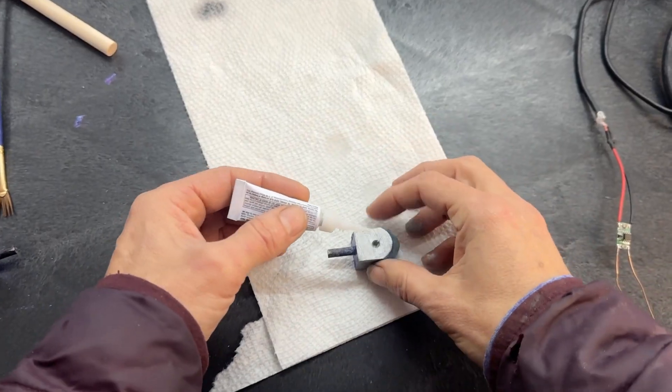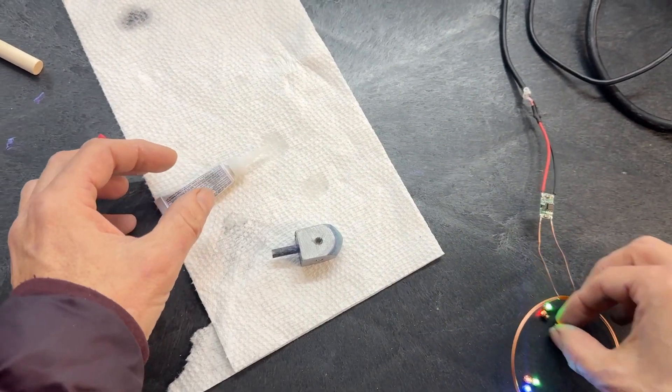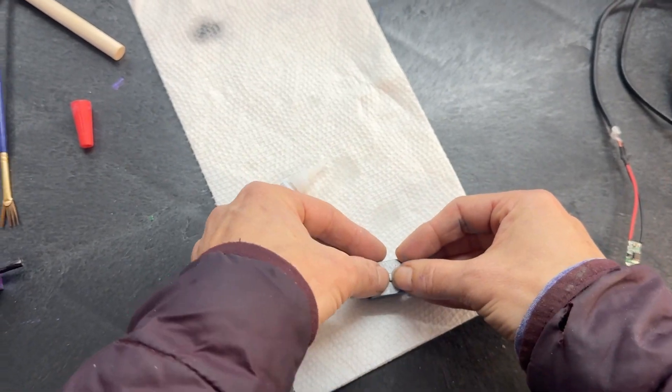Drill holes with a 3/8 inch bit for your lights and decorate your dreidels. A little CA glue holds the lights in place.